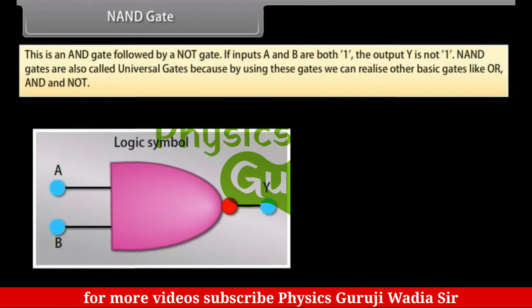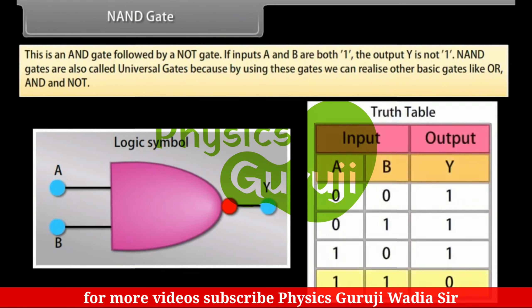NAND-Gate: This is an AND-Gate followed by a NOT-Gate. If inputs A and B are both one, the output Y is NOT-1.